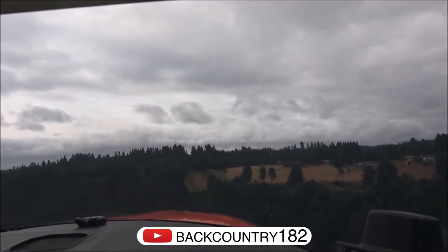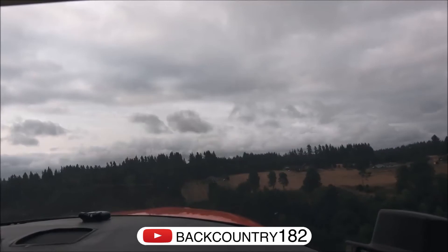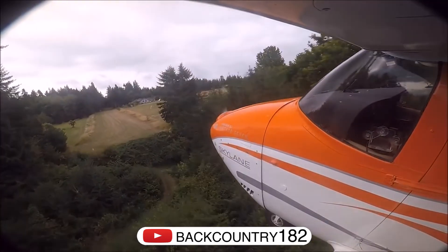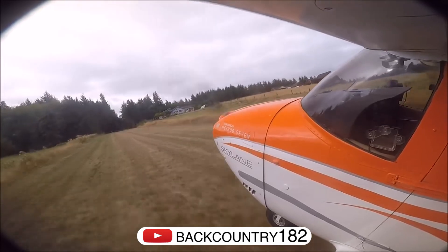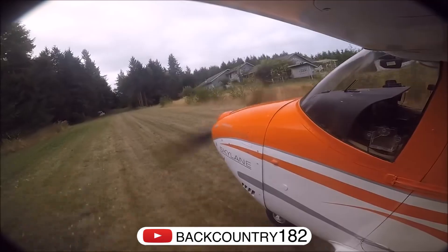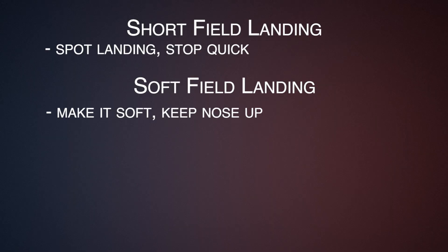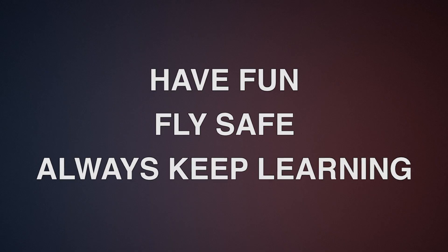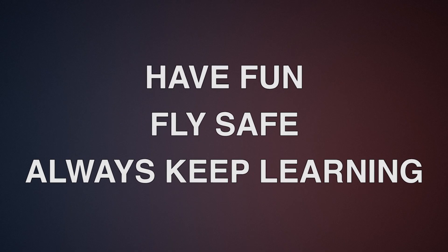That's the overview of short and soft field takeoffs and landings. You might have a situation where you have a short field and it's also rough, so you do have to do a combination of both techniques. In training, the problem with simulating these is that they're all simulated on a nice level paved runway and you have to use your imagination to imagine obstacles or a rough field. For a short field landing, make sure you land on a precise spot and stop pretty quick. For a soft field, make sure the nose stays off the ground and you touch down really soft. And if there's any crosswind, always apply your crosswind corrections. Thanks for watching — have fun, fly safe, and always keep learning.